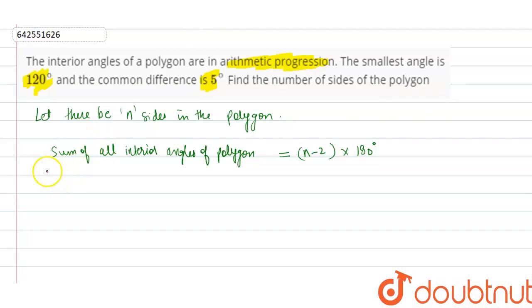Also, the angles are in AP with the smallest angle equal to 120 degrees and common difference equal to 5 degrees.